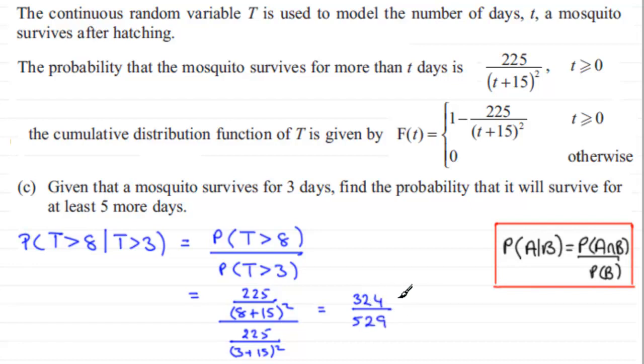If you work this out, you should find you get 324 over 529. You might like to leave it like that, but if you want to change it to a decimal, it turns out to be 0.6124 and so on. You could give that to three significant figures: 0.612.